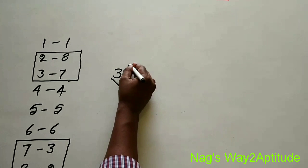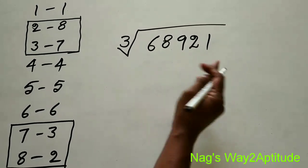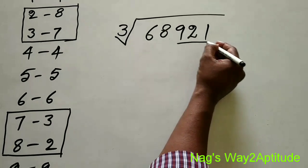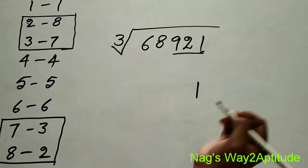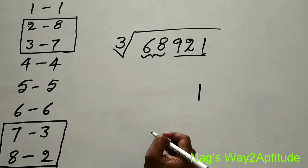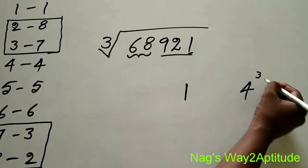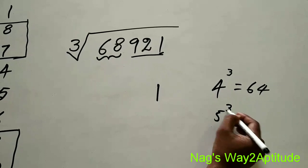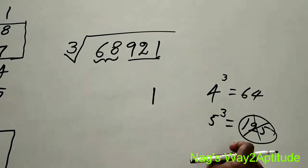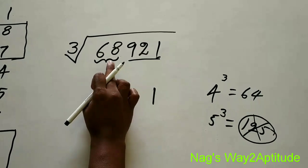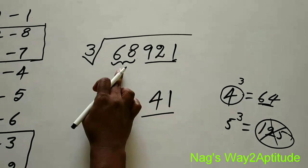Let's find the cube root of 68,921. Take the last 3 digits — the last digit is 1. Since cube of 1 ends in 1, the units digit is 1. Now take the remaining 2 digits: 68. The nearest cube not over 68 — 4 cubed is 64, and 5 cubed is 125 which is over 68. So we take 4. Therefore the cube root of 68,921 is 41.